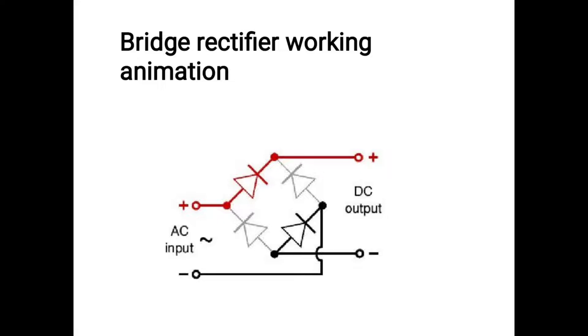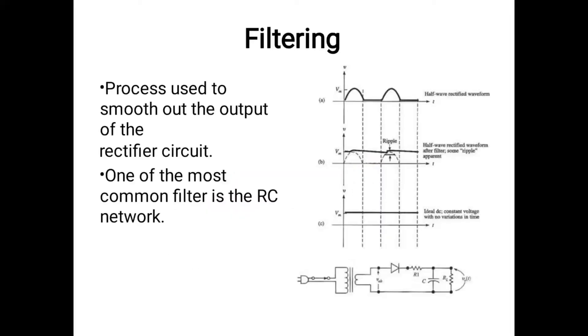The animation shows the work of AC voltage input and the output of DC voltage. The process used to smooth out the rectifier circuit, one of the most common filters used, is the RC network system.